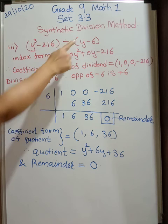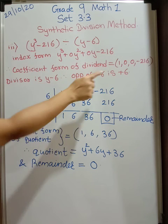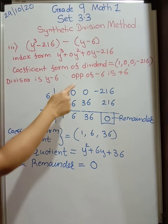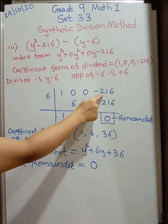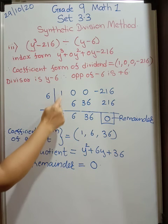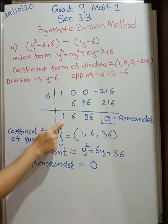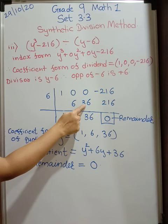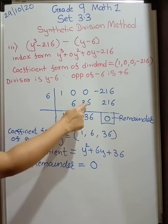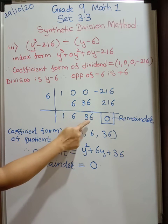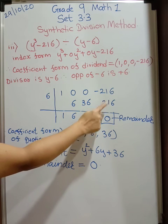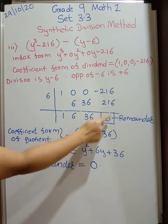Now divisor is y minus 6. Opposite of minus 6 will be plus 6. So here you are going to take plus 6 and here you will have 1, 0, 0 minus 216. 1 as it is down. 6, 1's are 6. 0 plus 6, 6. 6, 6 are 36. 36 plus 0, 36. 36 into 6. Understand the operations. So 36 into 6 is 216. Now plus 216 and minus 216 becomes 0.